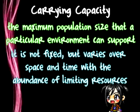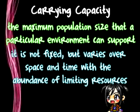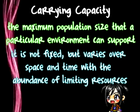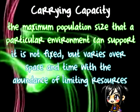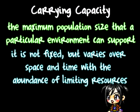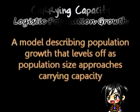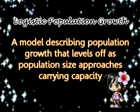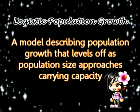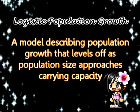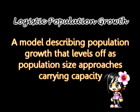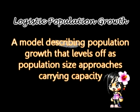Carrying capacity is symbolized as K. It is the maximum sustainable population an environment can support, depending on the abundance of food, shelter, water, etc. The logistic population growth model is an equation that can be used to determine per capita growth rate and population growth rate.